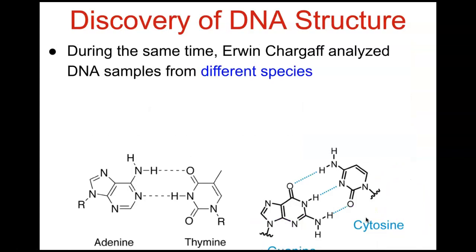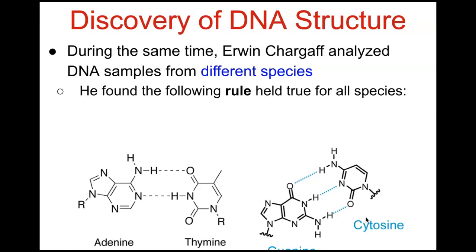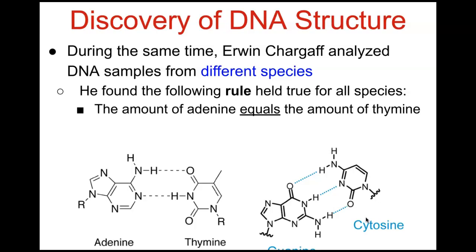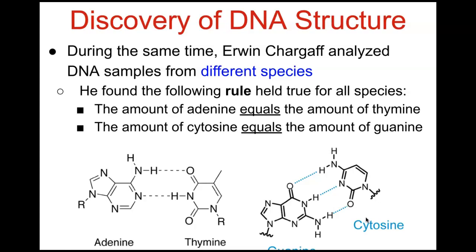Another gentleman who played a role in determining DNA structure was Erwin Chargaff. He analyzed DNA samples from different species and found that the following rule held true for all organisms: the amount of adenine equals the amount of thymine, and the amount of cytosine equals the amount of guanine. These are the rules for base pairing — adenine always binds with thymine, and cytosine always pairs with guanine, held together via hydrogen bonds. Between adenine and thymine there are two hydrogen bonds, and between guanine and cytosine there are three.